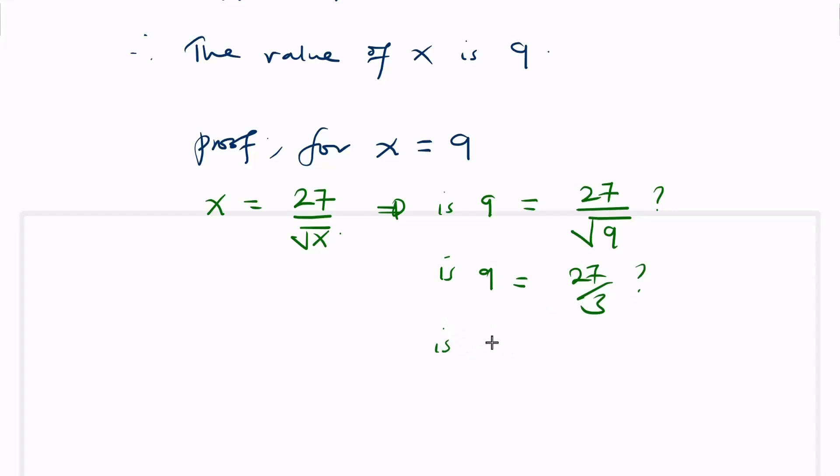We see that 9 equals 27 divided by 3, which is 9. So the answer is correct. This means that x equaling 9 is the correct value for this expression.